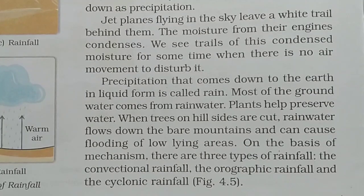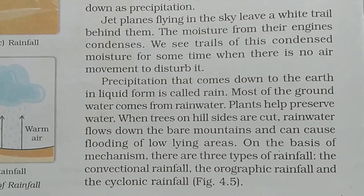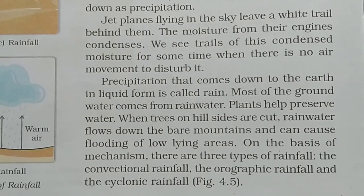Precipitation that comes down to the earth in liquid form is called rain. Water vapor goes up and forms clouds, then comes back down as heavy precipitation — when it falls in liquid form it is called rain. Most of the ground water comes from rain water. Plants also help preserve water.